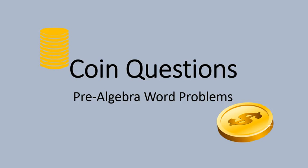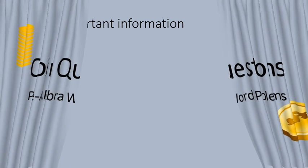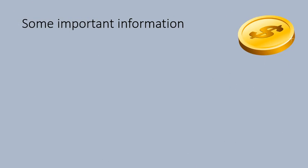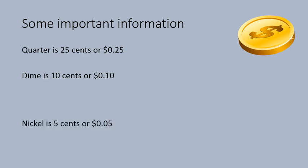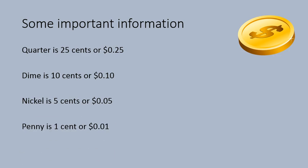Hello, this is Mr. Buffington, and today we're going to look at some coin questions, some pre-algebra word problems involving coins. Some important information that you need to know: a quarter is worth 25 cents, a dime is worth 10 cents, a nickel is worth 5 cents, and a penny is worth 1 cent. These are common coins used in North America and are the main types that will appear in these word problems.